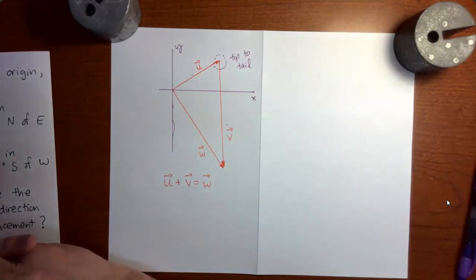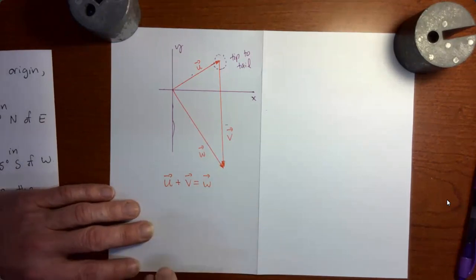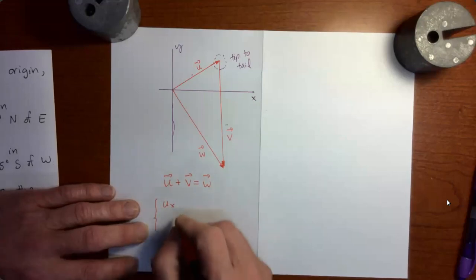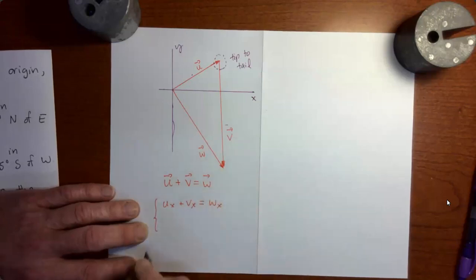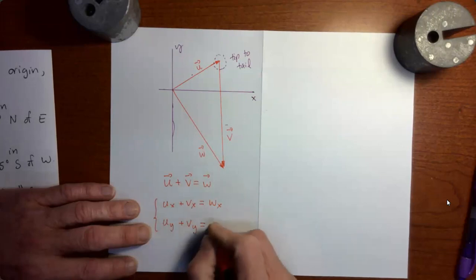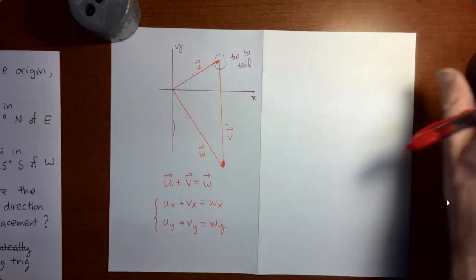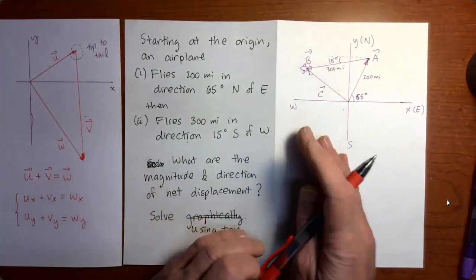Here is our new principle for doing calculations with vectors. It turns out that if you have two vectors which sum together to make the third vector, then we have exactly the same relation between the components of the vectors. That means the x component of u plus the x component of v equals the x component of w, and similarly the y component of u plus the y component of v equals the y component of w.